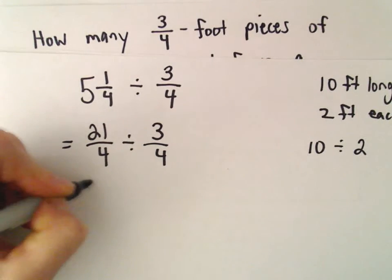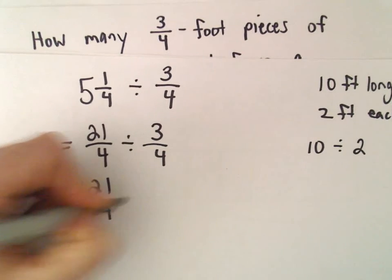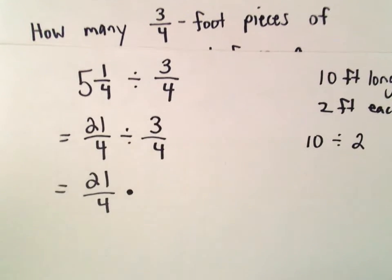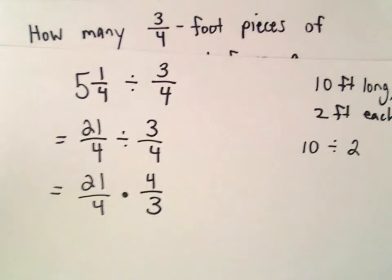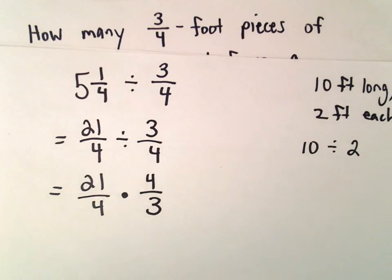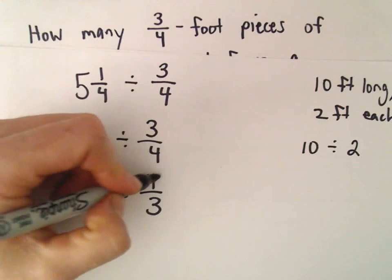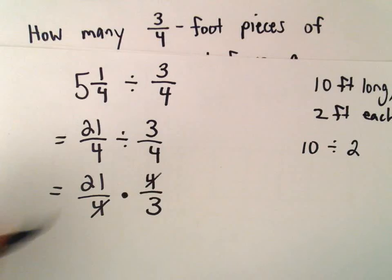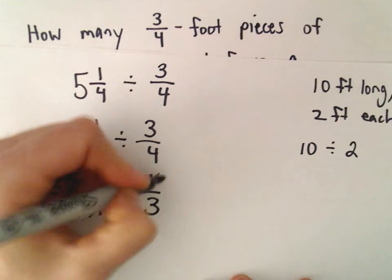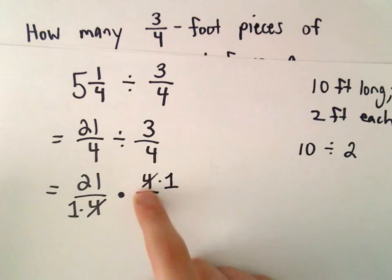Now I'm going to make my division into multiplication by multiplying by the reciprocal. But now I can cancel out some factors immediately. So the four and the four, we could just say four divided by four is one. Four divided by four is also one.